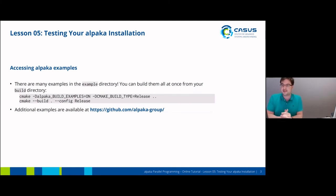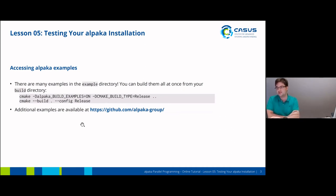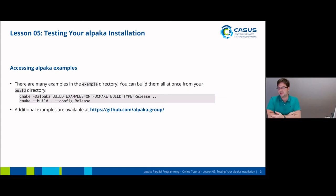There are also some ALPACA examples available. If you go to the top level source directory, you will see the example directory, and you can build them all at once from your build directory by enabling the ALPACA build examples flag. We will also upload additional examples over the course of the next few lessons to our GitHub group and will talk about them in detail over the next days, so you should have a lot of different examples to look at by the end of the week.